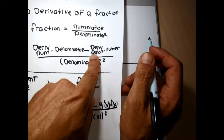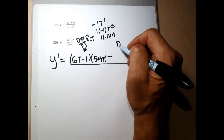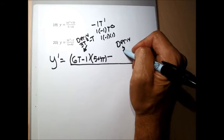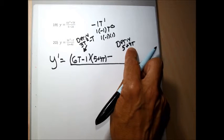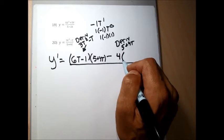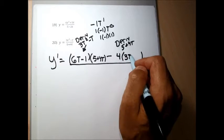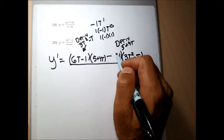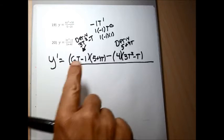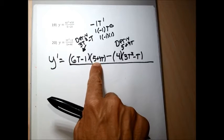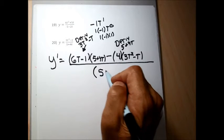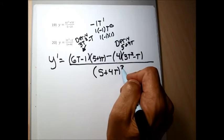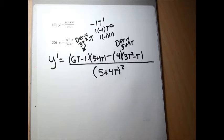After the minus sign, I write the derivative of the denominator, 5 plus 4t. The 5 is a constant with derivative 0; 4t has derivative 4. Then I write the whole numerator, 3t squared minus t. That completes the numerator: derivative of numerator times denominator, minus derivative of denominator times numerator — all over the denominator squared, (5 plus 4t) squared. Now I simplify by clearing parentheses and combining like terms in the numerator, leaving the denominator unchanged.